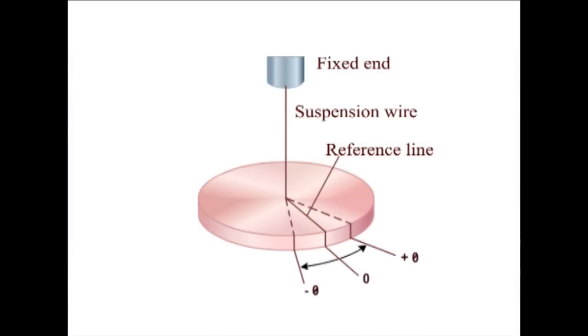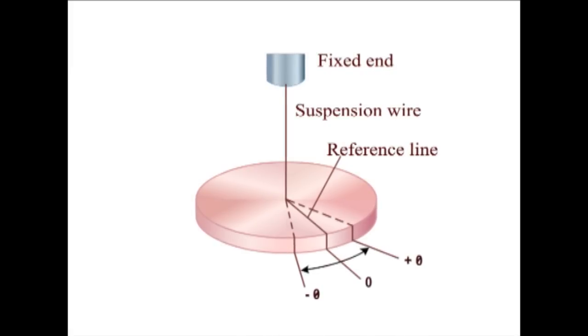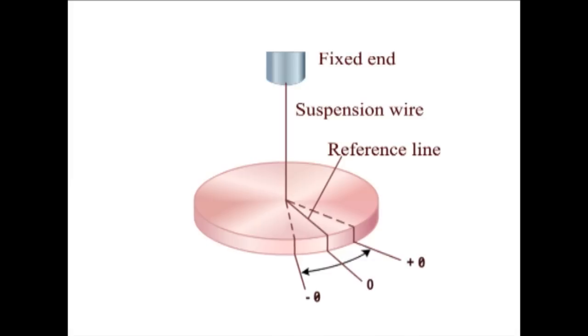The mass is rotated through a small angle about the wire as the axis and released. The disc makes torsional oscillations.